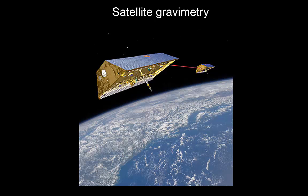This mission has two satellites nicknamed Tom and Jerry, who chase each other in orbit around the Earth. With a laser beam, they measure the distance between each other extremely accurately — within a tenth of the width of a human hair. That's quite an achievement when you consider that these two satellites are about 220 kilometers apart.